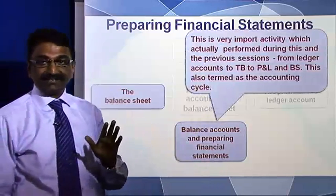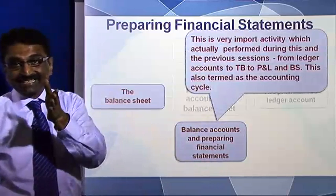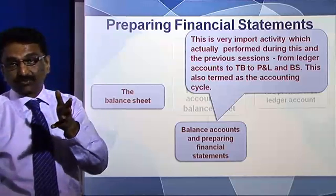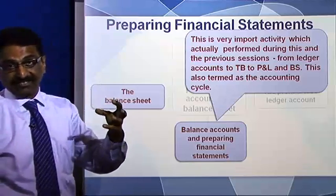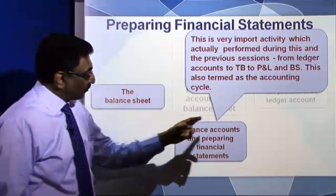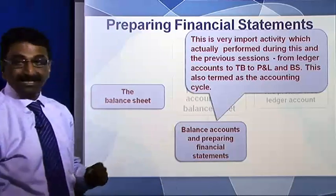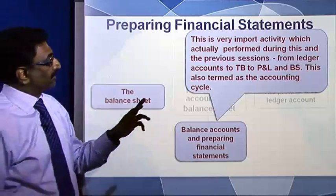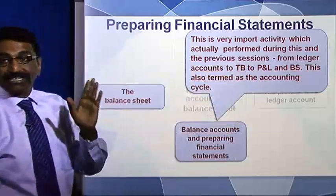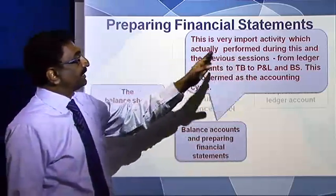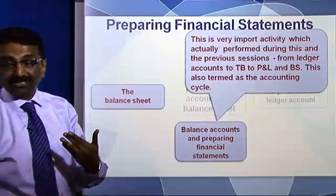Basically, the accounting cycle is nothing but balancing the ledger accounts through a trial balance, and then drawing a profit and loss account and a balance sheet from it — which is known as the preparation of financial statements through the balancing account process, also termed the accounting cycle. It starts from ledger accounts to trial balance, to P&L, and to the balance sheet.